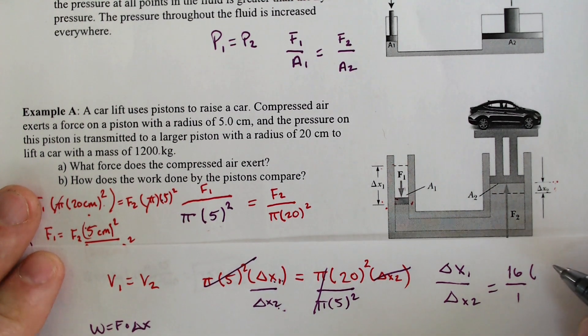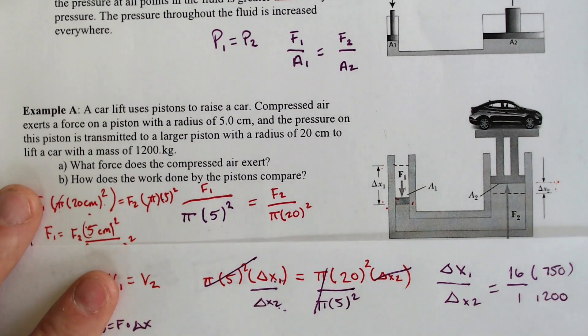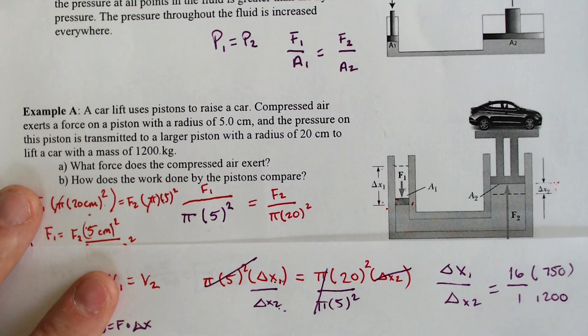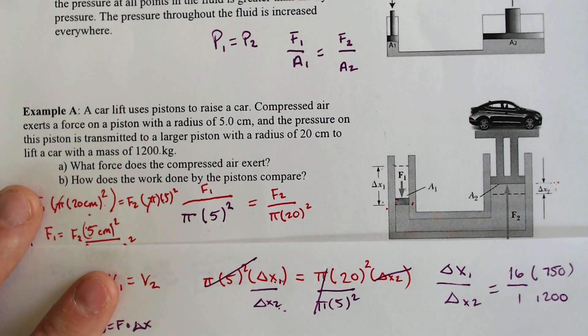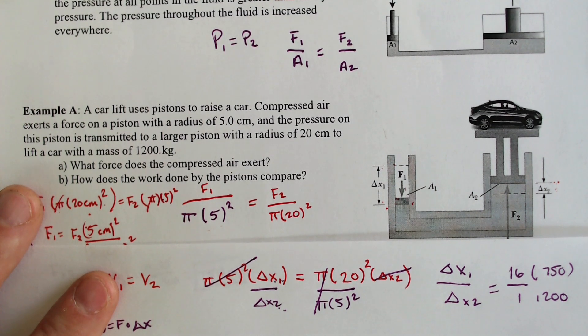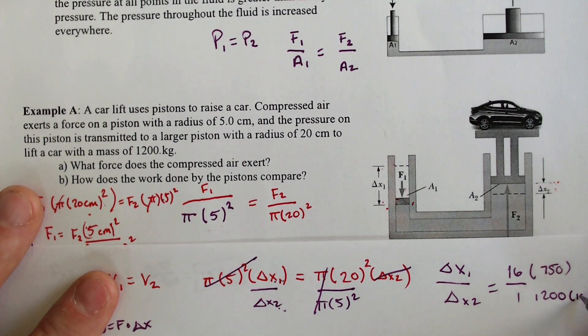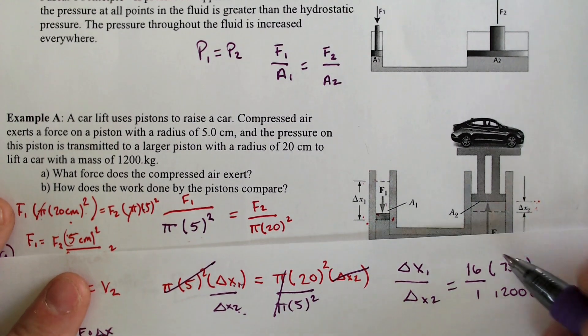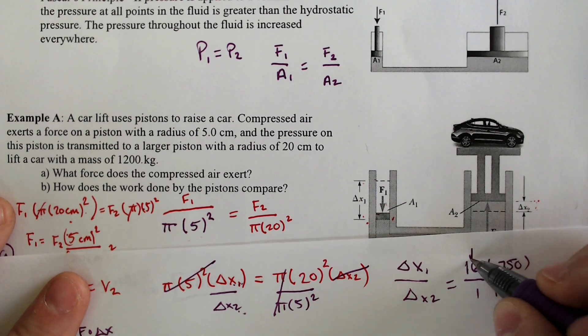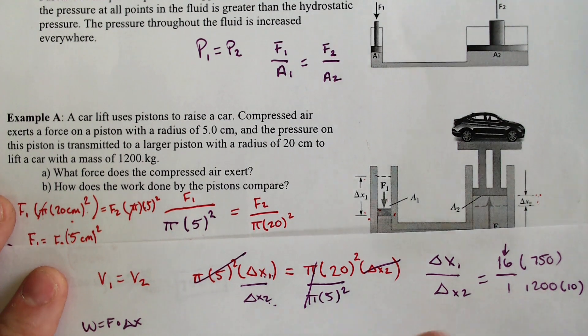And if we plug that in for 750, and we plug in the 1,200, we get 16 times 750 divided by 1,200. Oh, it's not 1,200. Why is it not 1,200? It's 1,200 times 10 because it's 1,200 kilograms times 10 for gravity. We had the acceleration part.